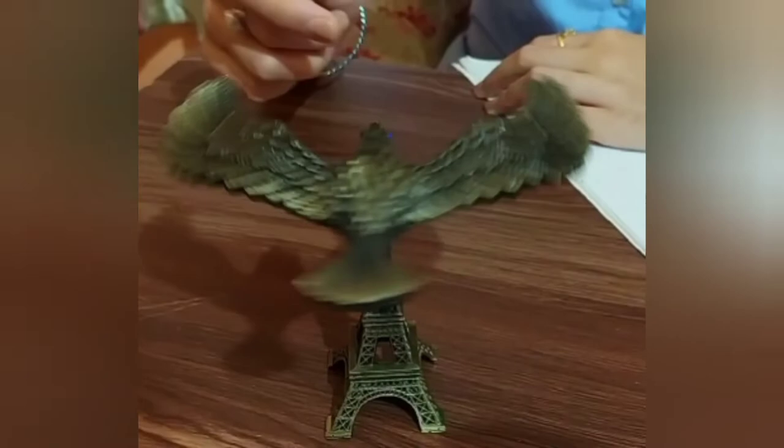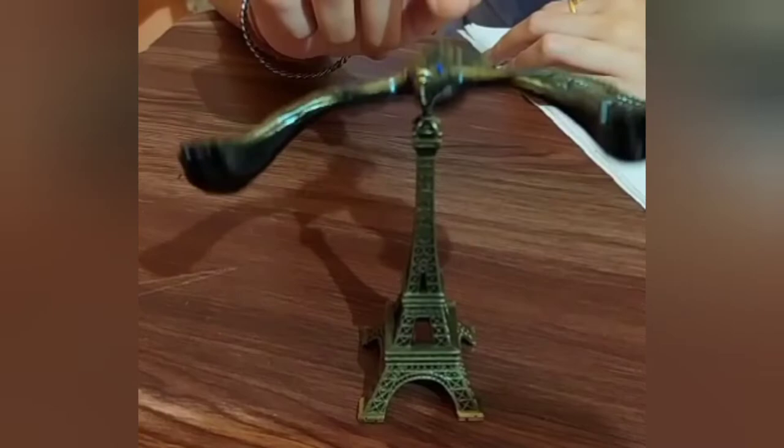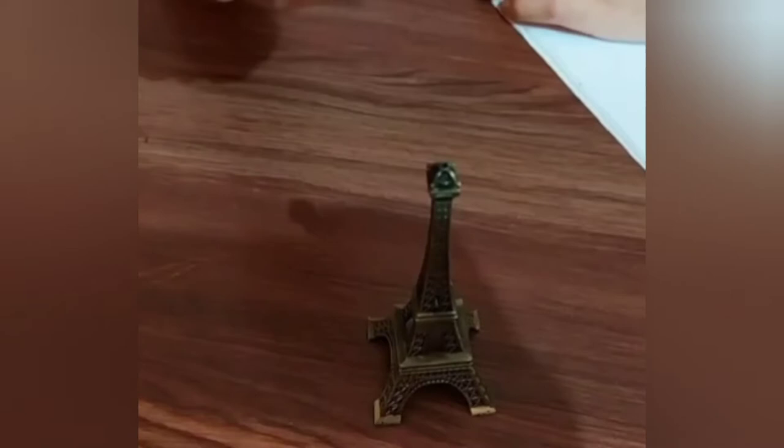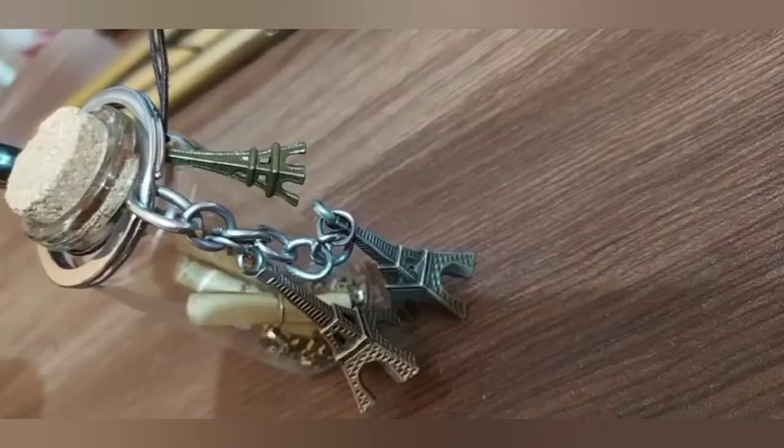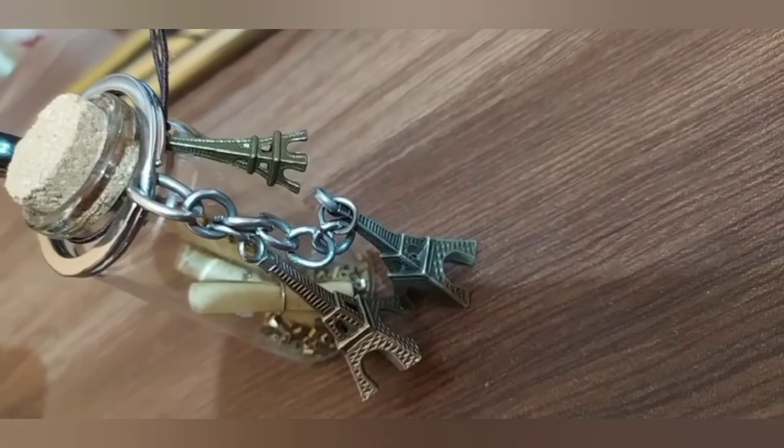Another thing I have is this message in a bottle novel inspired glass jar which has this cute little Eiffel Tower with it. Another thing I have is this key chain which has two Eiffel Towers. And another thing I have is this gorgeous wind chime - it sounds really amazing.